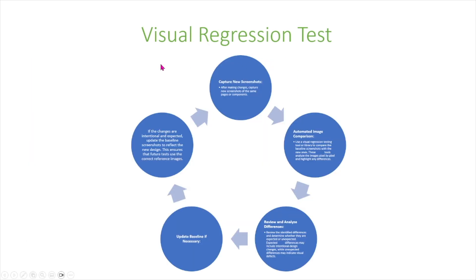After that, we capture new screenshots of the same pages or components. Then we use automated image comparison — using visual regression testing tools or libraries, we compare the baseline screenshots with the new ones. These tools analyze the images pixel by pixel and highlight any differences. We then review the identified differences and determine whether they are expected or unexpected. Expected differences may include intentional design changes, while unexpected differences may indicate visual defects.